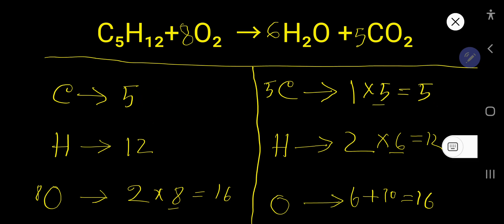Now everything is balanced. 5, 5, 12, 12, 16, 16. So you can say that this is the balanced chemical equation.